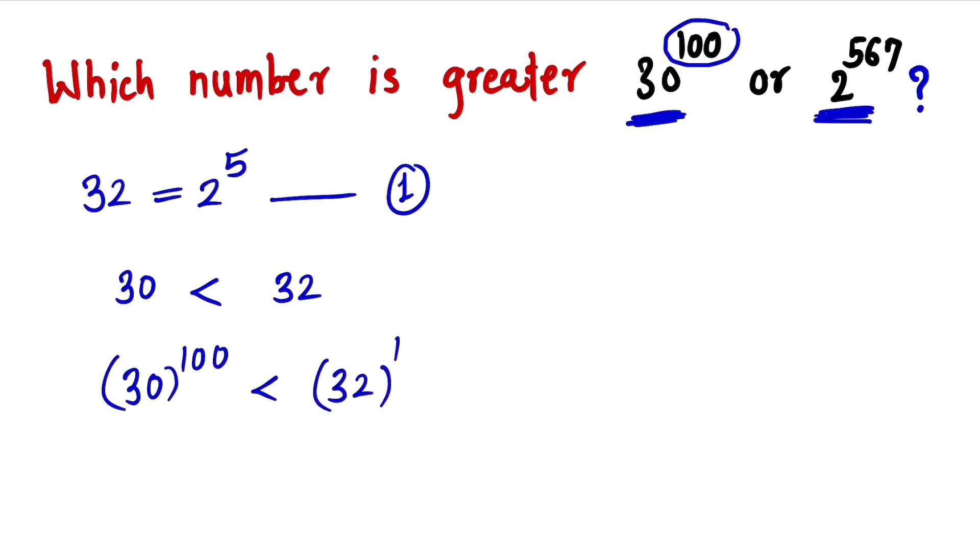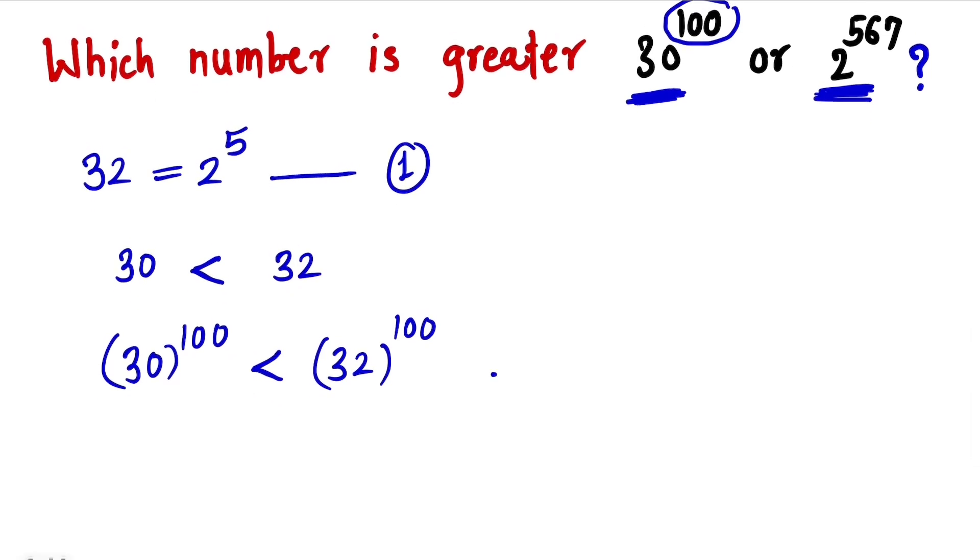The inequality sign here remains the same because these 2 are positive numbers. So this gives us 30 raise to 100 is less than 32. What is 32? It is nothing but 2 raise to 5, and the whole thing raise to 100.